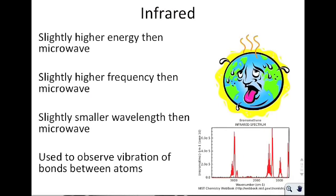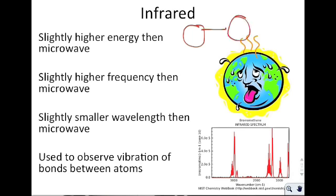Infrared radiation you can think of as heat that is transmitted — not direct contact heat, but heat transferred at a distance. If you hold your hand near a heat source without touching it, that's infrared radiation. Infrared has slightly higher energy, slightly higher frequency, and slightly smaller wavelength than microwaves. Infrared radiation can actually be used to vibrate the bonds between atoms — since bonds vibrate back and forth, getting larger and smaller, we can use this to determine what the bond is or what is on either side of it.